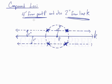So, in determining compound loci, what we want to do is take a look at each condition individually and sketch it, and just find the points where they intersect. And that will tell us our actual solution which satisfies both conditions.